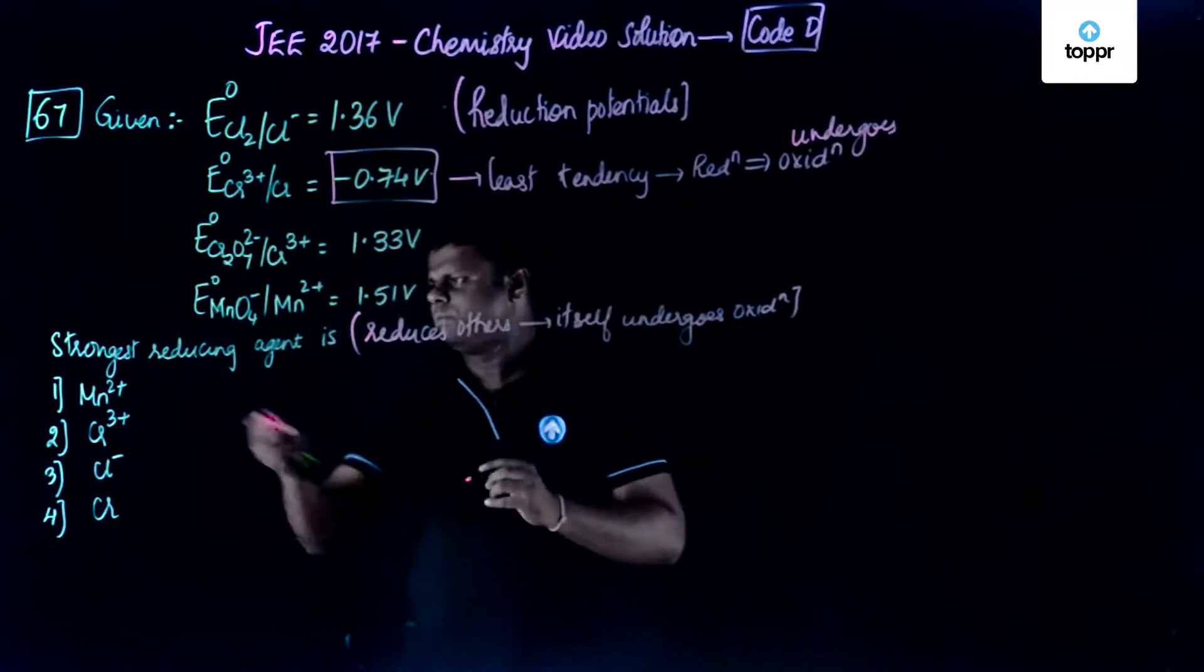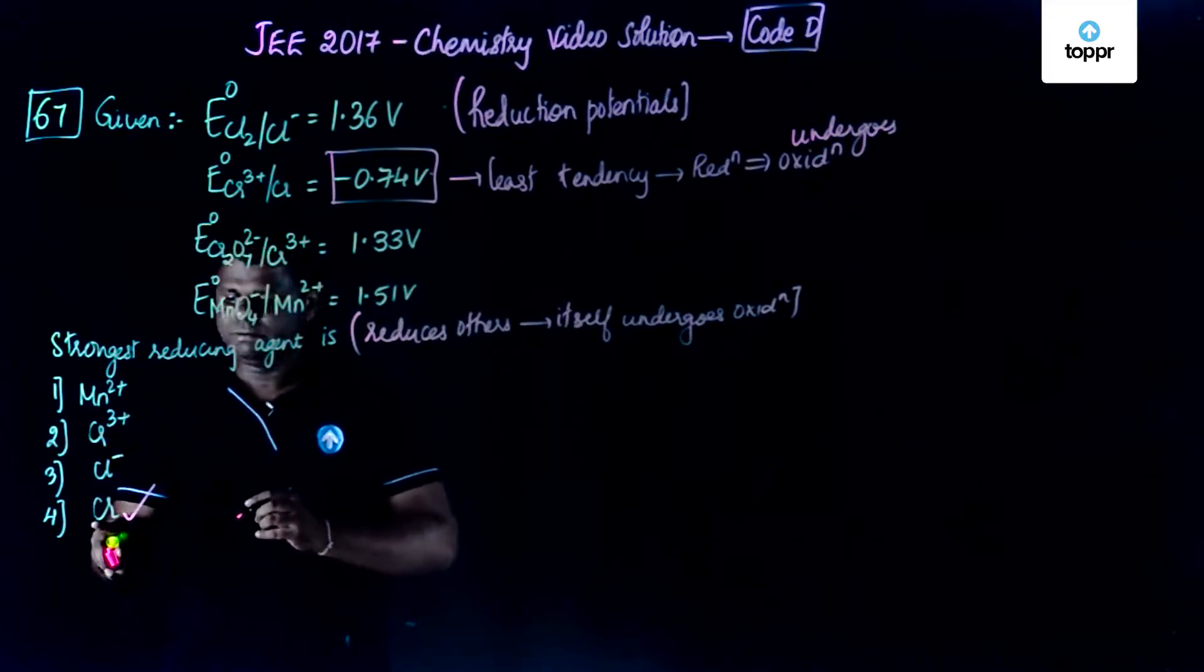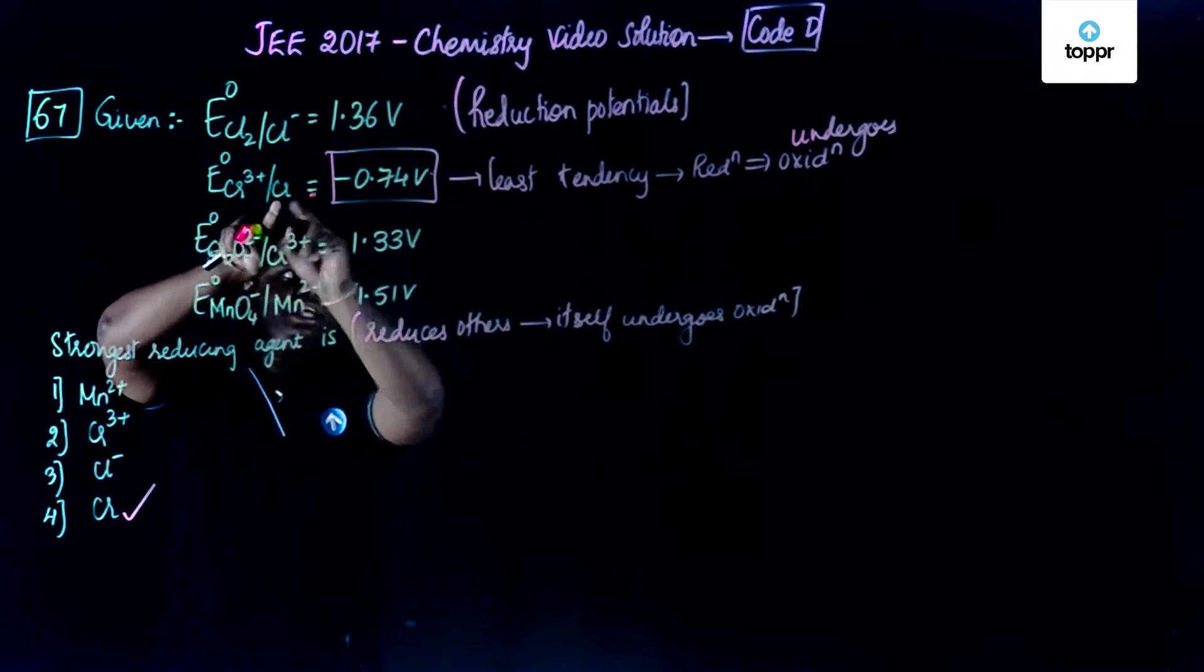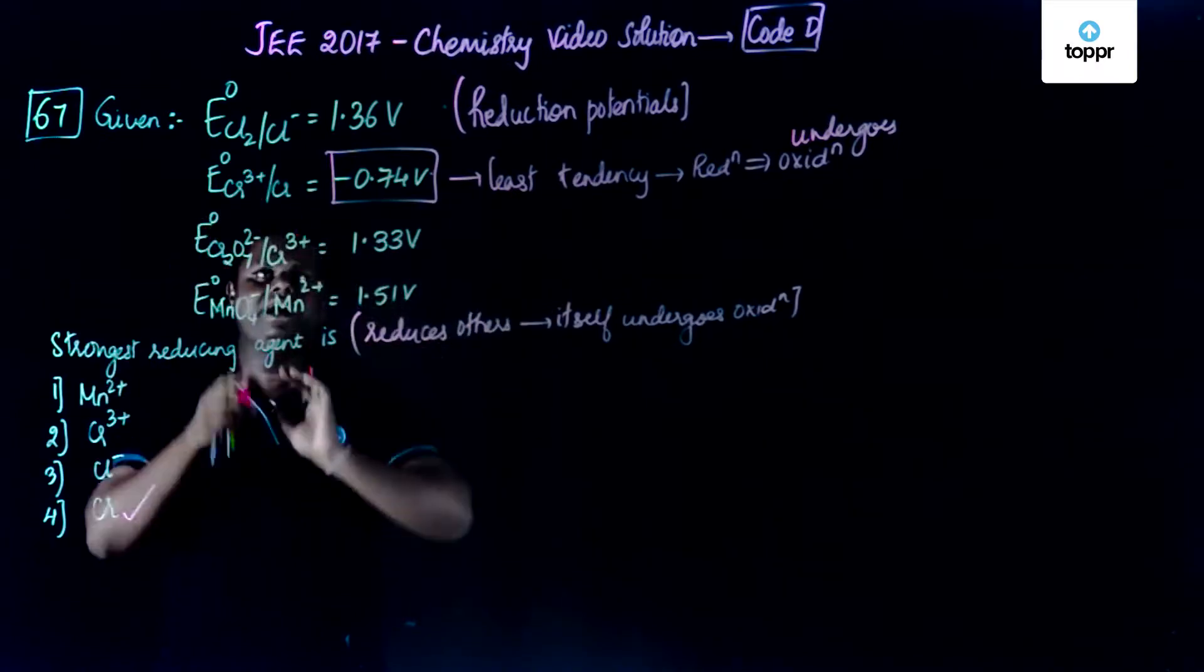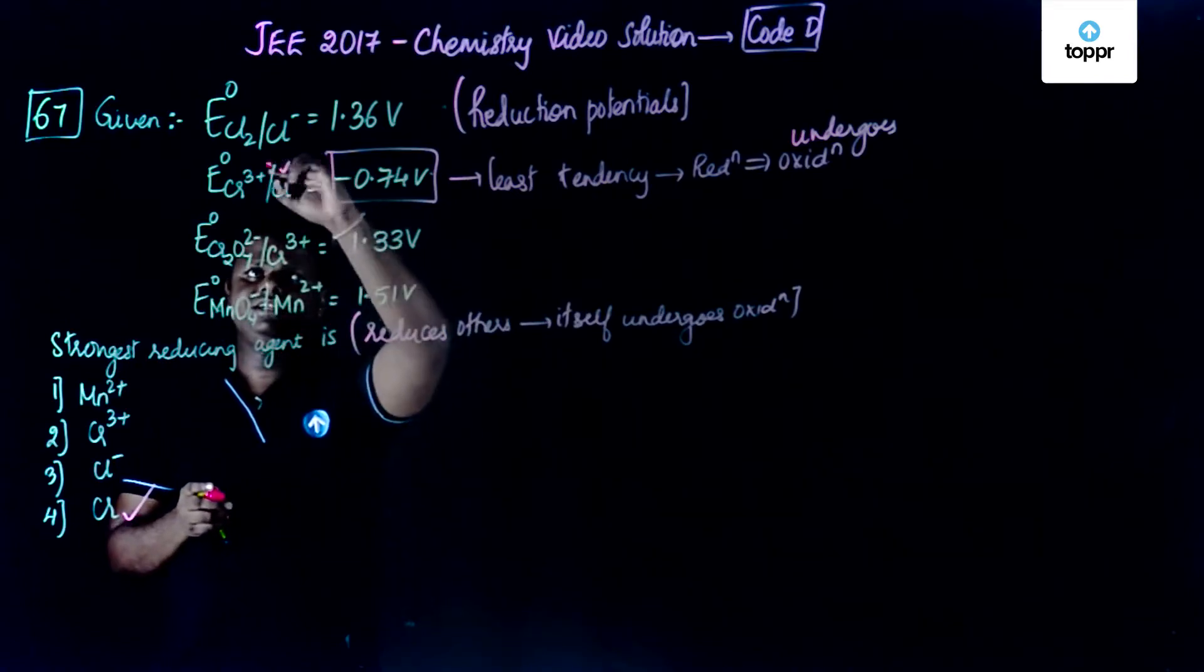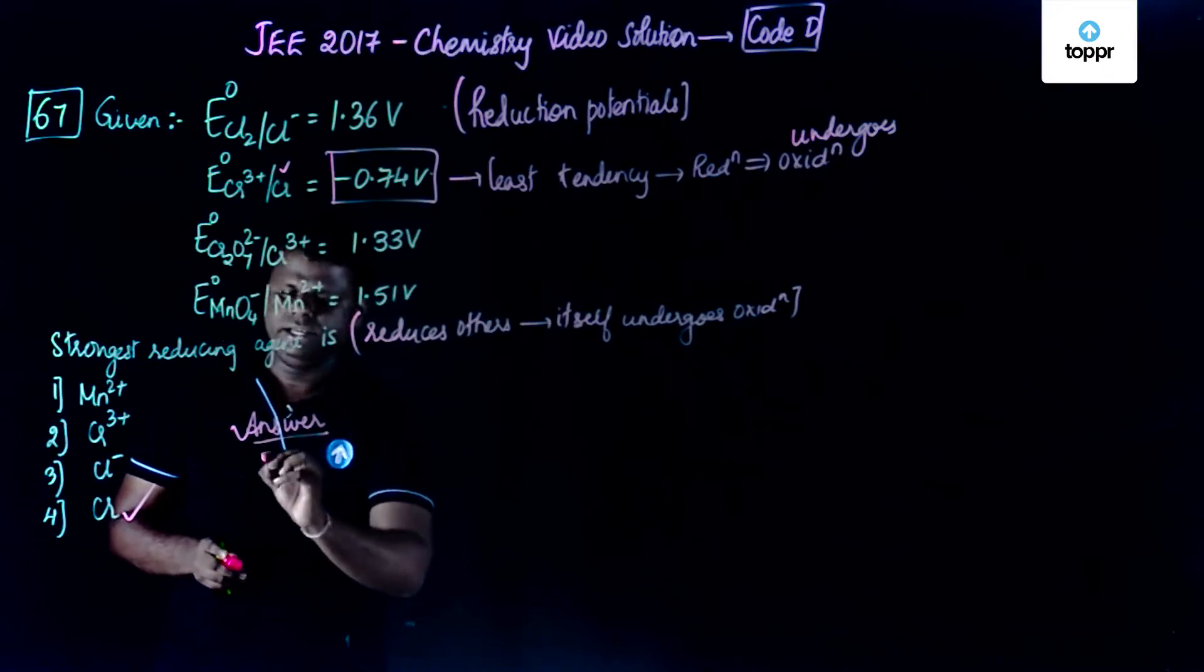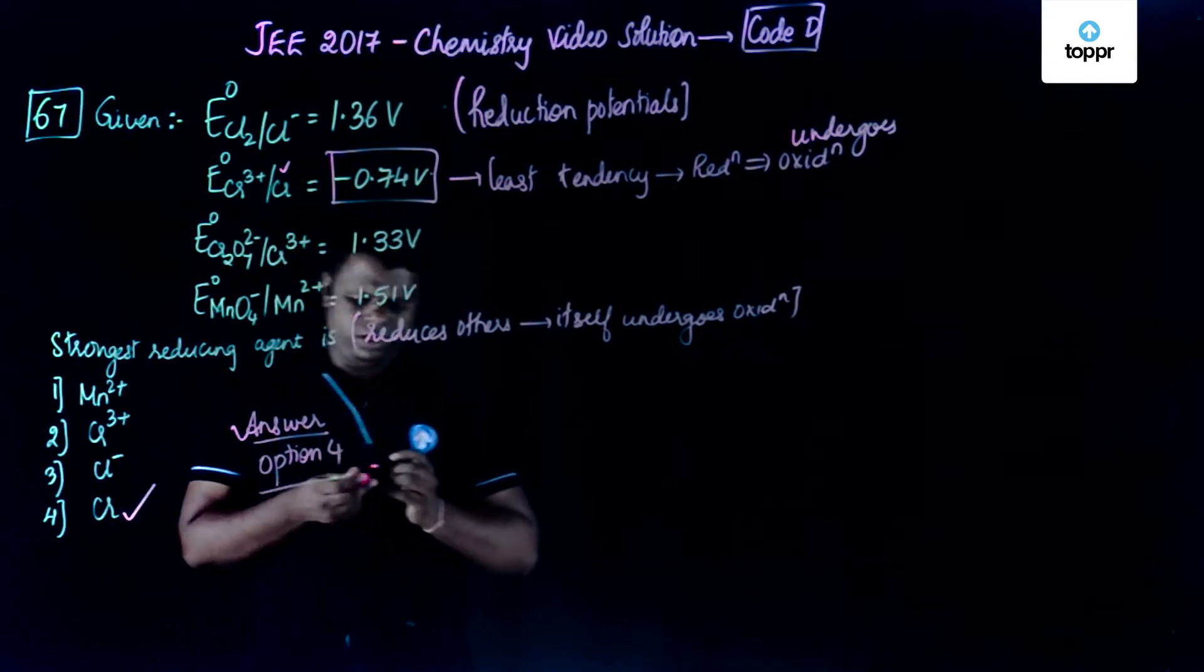So the correct option for this particular question is chromium. Now you may get confused between Cr3+ and Cr. So just have a look: Cr3+ reduces to Cr. They are asking about this particular Cr3+ goes to Cr, so Cr has to be considered and not Cr3+. So the correct answer for this particular question is option number 4.